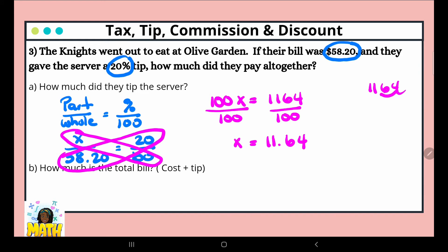To find the total bill, we are going to add $58.20 plus $11.64. Let's stack them and do the addition: $58.20 plus $11.64. 0 plus 4 is 4, 2 plus 6 is 8, bring down that decimal point, 8 plus 1 is 9, 5 plus 1 is 6. So the total bill is $69.84.